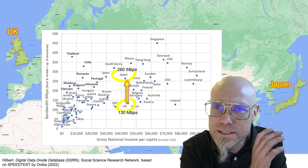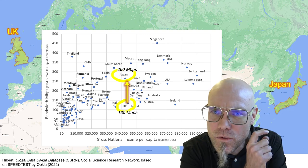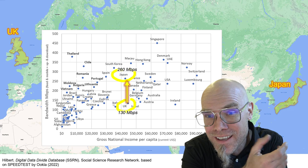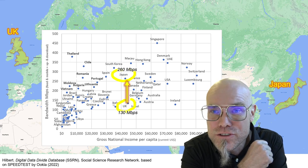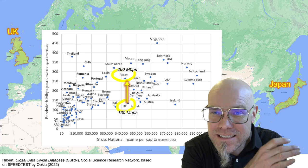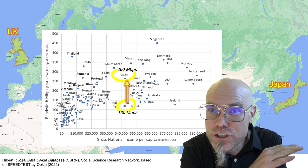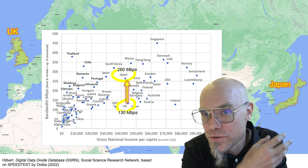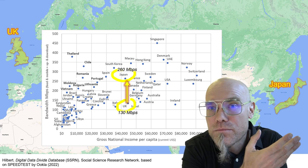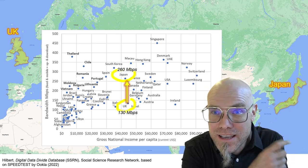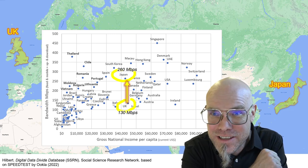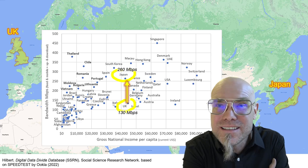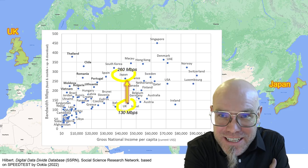It would be very interesting to see what Japan did right — or what the UK did wrong — in order to advance the diffusion of broadband communication. And that leads us to the next lecture, where we will talk about the digital divide.